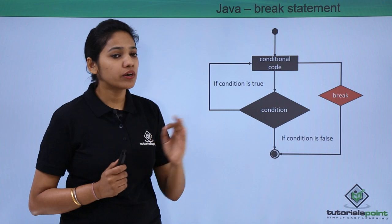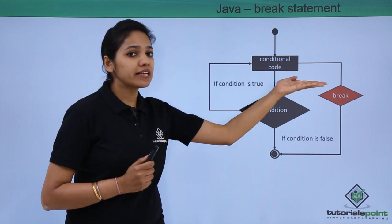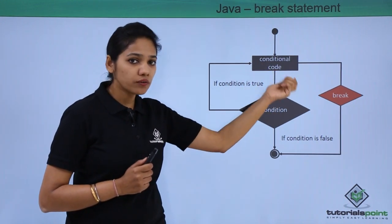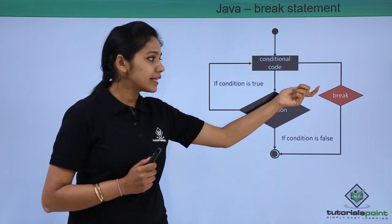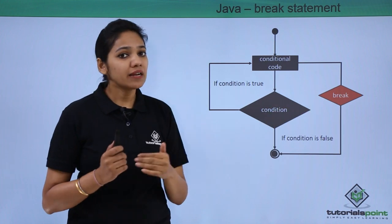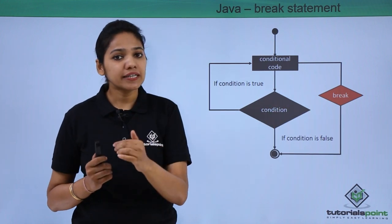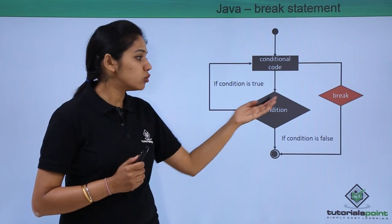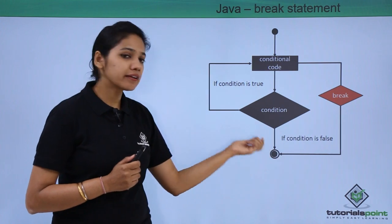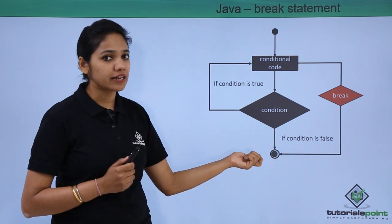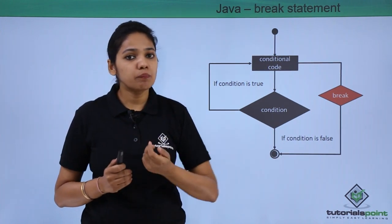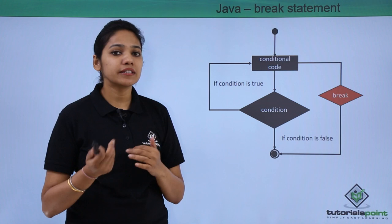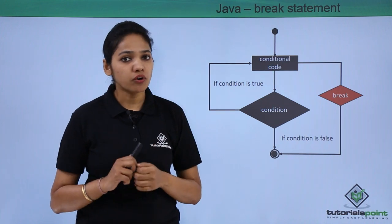When a break keyword is encountered while it is trying to execute a block of statements, at that particular time the break will terminate the loop and come outside. So let us understand how the break keyword works in the case of a for loop.